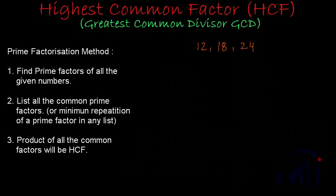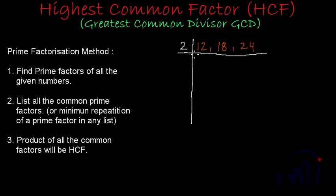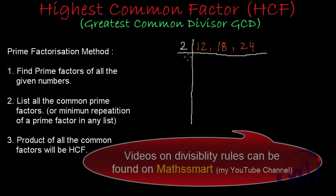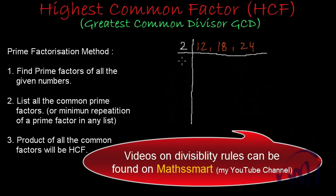In this alternate method, we try to find a factor which is common to all numbers. Because we are finding the highest common factor, if we look at 12, 18, and 24, all of them are even numbers. So all of them will be divisible by 2. We have to think about a prime number which divides all the given numbers.